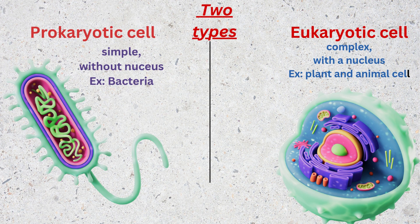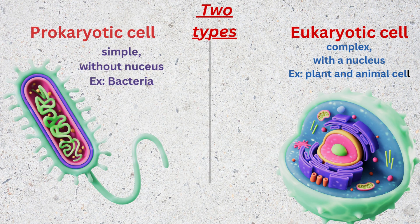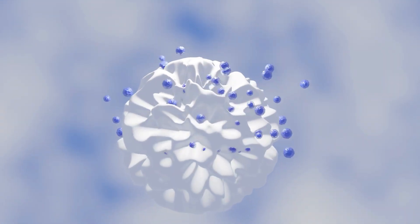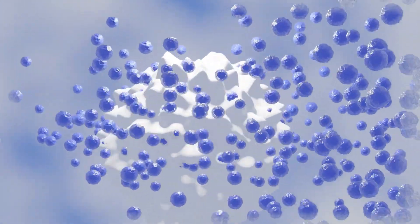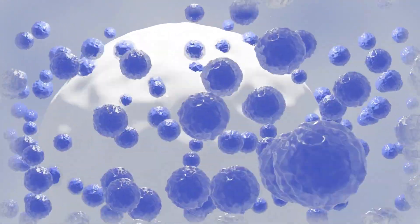Eukaryotic cells are what we will focus on today, because they make up most living things, including us. Now, let's break down the key parts of a typical animal cell and plant cell.